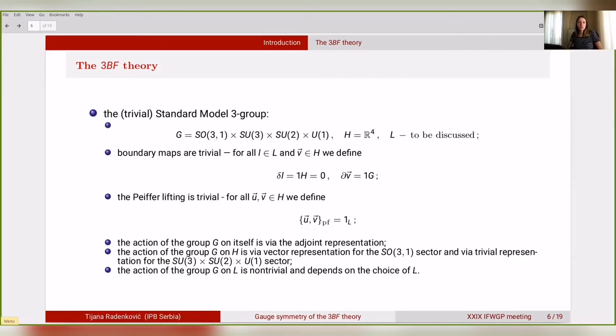Now we are interested in the realization of the 3BF theory that will give us the standard model coupled to gravity. The choice of the 3-group is the following: we choose the group G as the direct product of the Lorentz group and the internal symmetry subgroup U(1) times SU(2) times SU(3). Then we choose the group H as the space-time translation group, and we will soon discuss the choice of the group L. The boundary maps are chosen to be trivial as well as Pfeiffer lifting. The action of group G on itself is via conjugation by definition. The action of group G on H is via vector representation for the Lorentz sector and via trivial representation for the internal symmetry sector. Then the action of group G on L is non-trivial and depends on the choice of L.